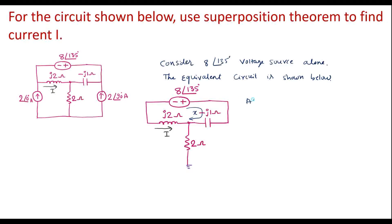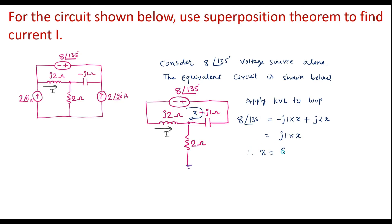Applying KVL to this loop: 8∠135° = (-j1)(x) + (j2)(x). That is j2 - j1 = j1, so j1 · x = 8∠135°. Therefore, x = 8∠135° / j1. Solving, we get x = 5.656 + j5.656 in rectangular form, or in polar form it can be represented as 8∠-135°.